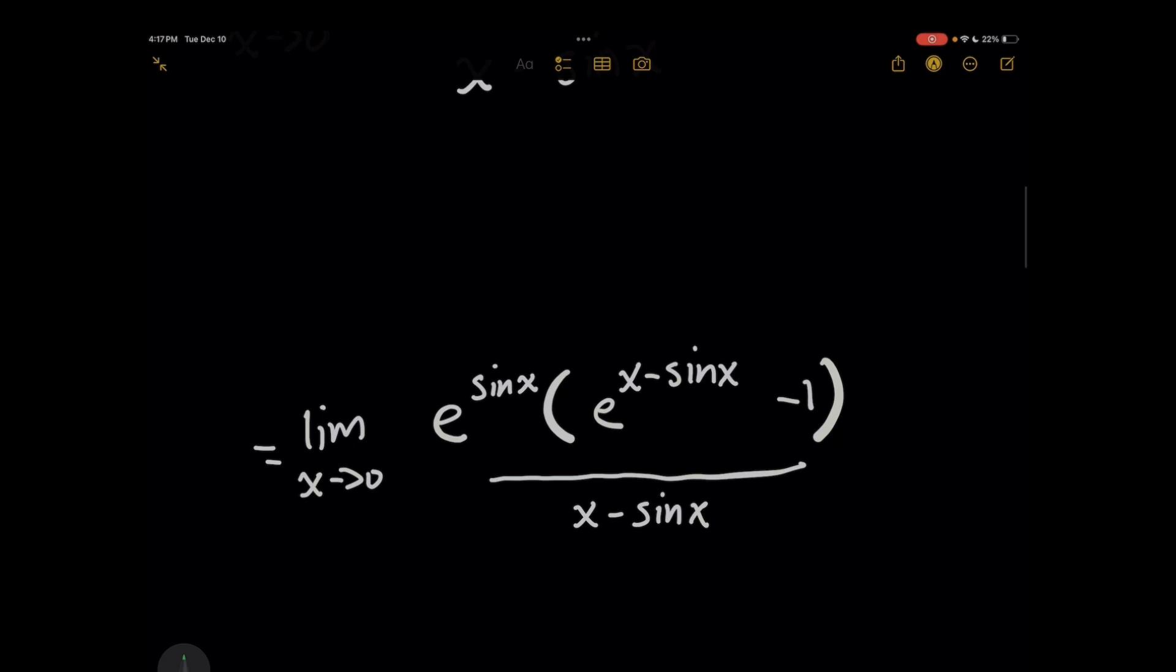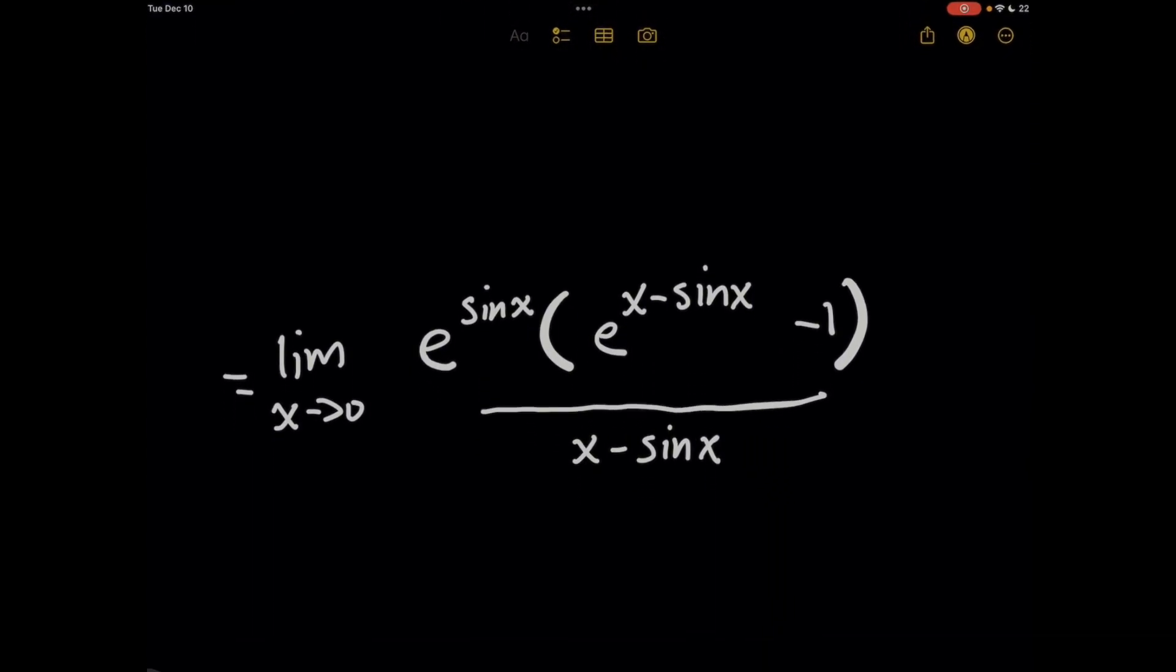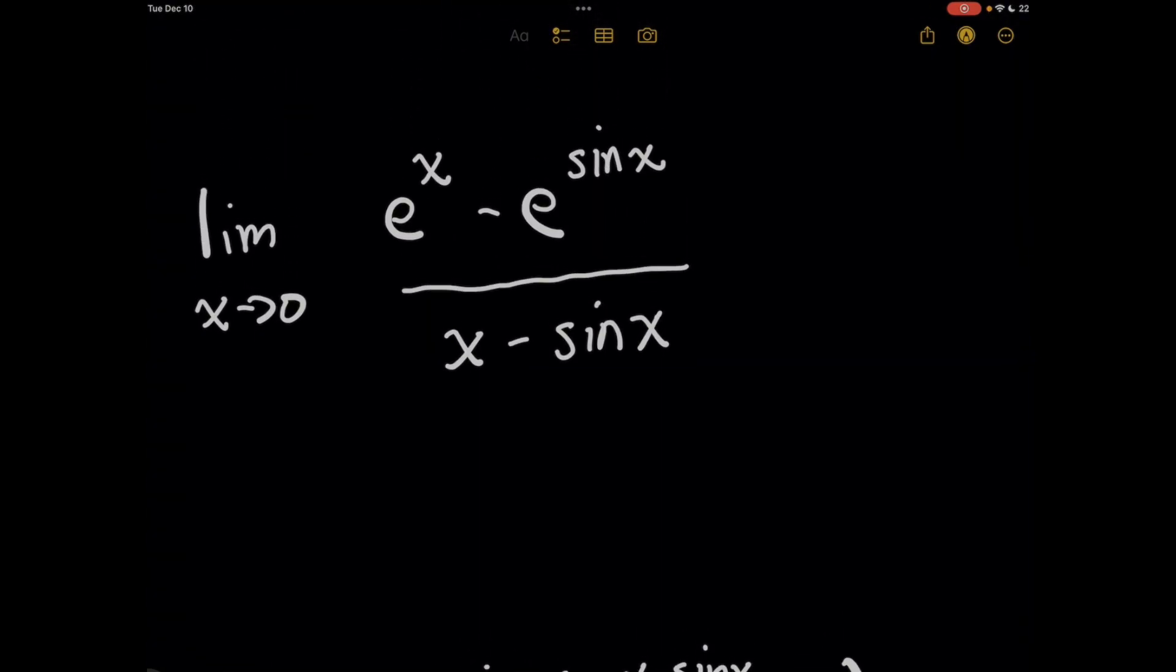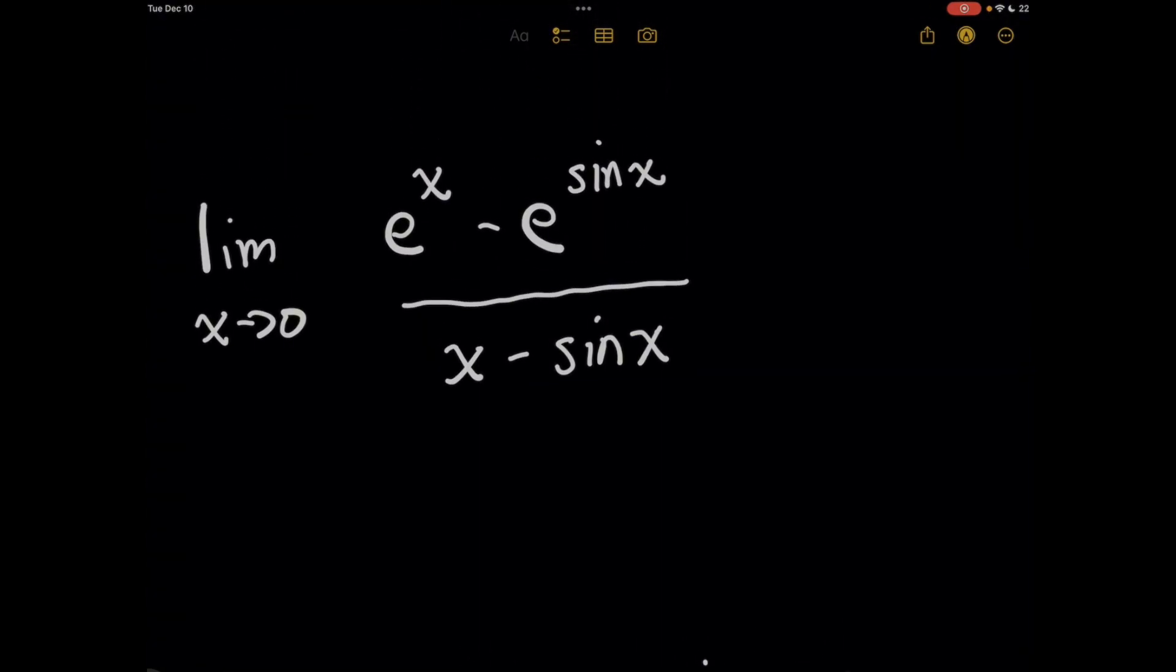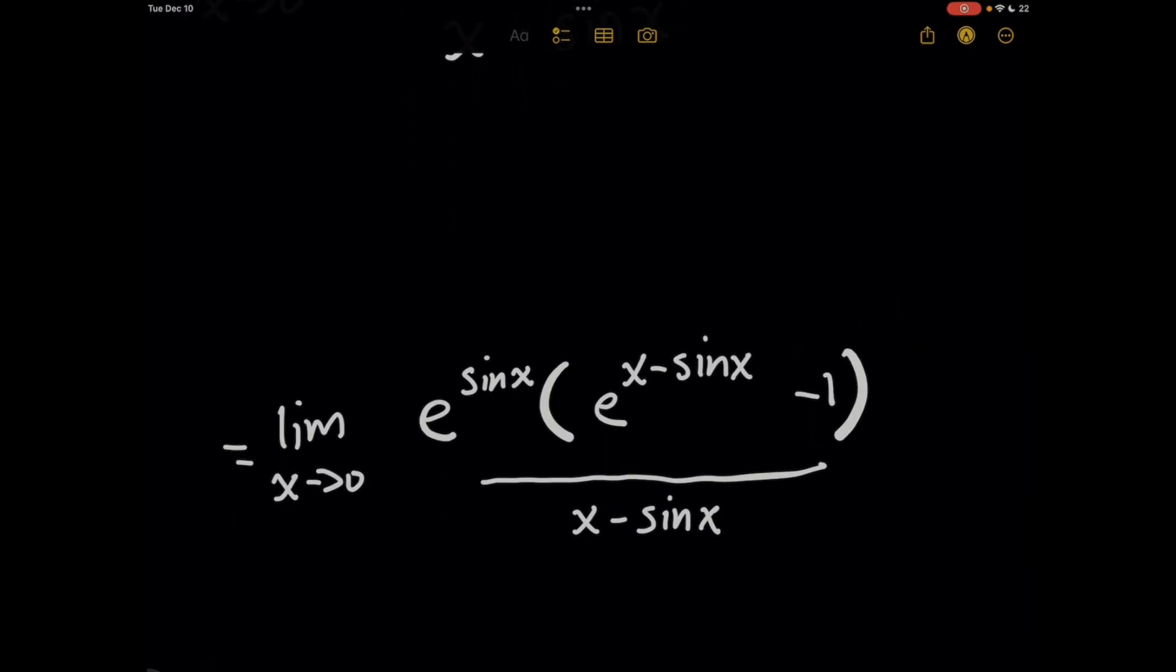What I'm going to do is I'm actually going to manipulate this equation by bringing out an e to the sine of x term. And you might be wondering, well how am I doing that? Because on the top, how do you factor out e to the sine of x given that the first numerator term is just e to the x? Well, remember with the rules of products, I can rewrite that term as e to the x minus sine of x, because when you multiply it through with this e to the sine of x that I brought out, you get back the original e to the x.